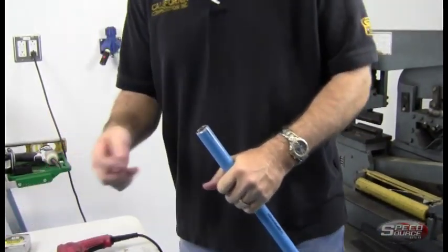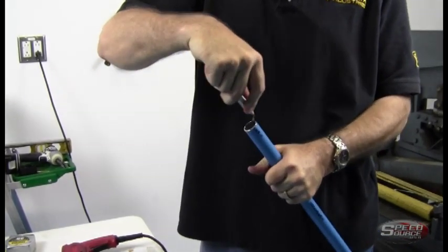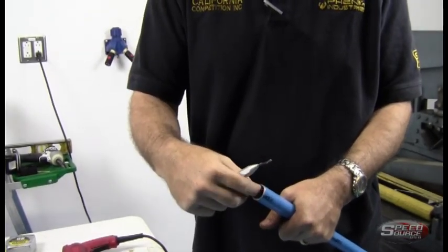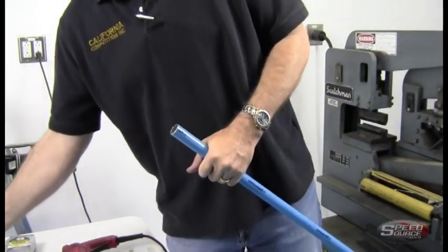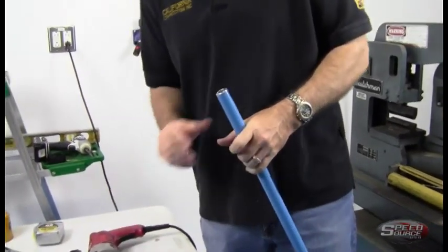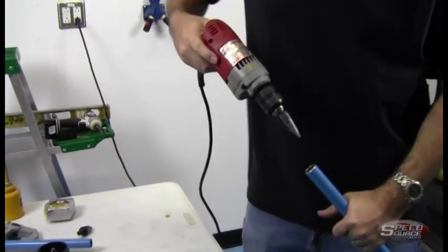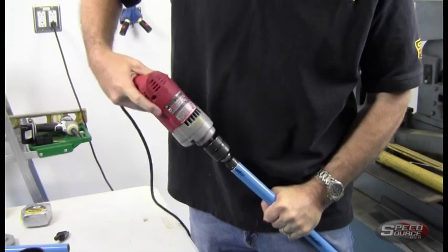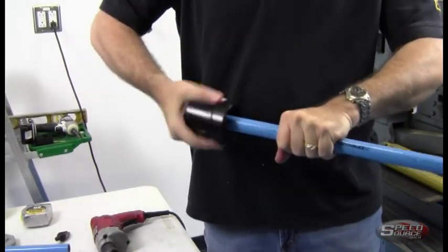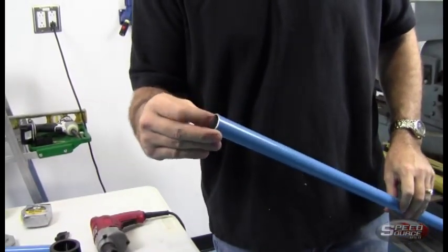A couple of tools you could use. A deburring tool—you rotate it around and it actually cuts the inside and deburs here. If you're going to be doing a lot of tubing, a step drill really makes things easy. Hold the pipe, give it a couple spins, take off any last minute things, and you've got a really nice clean cut.